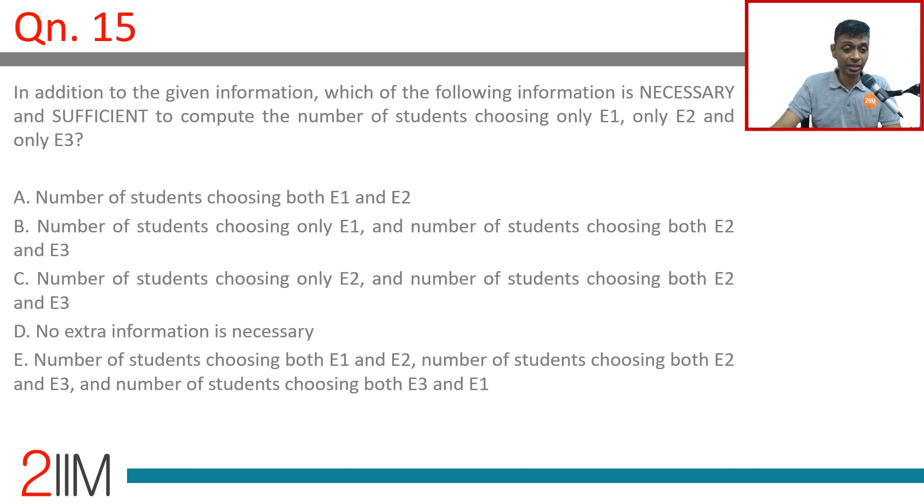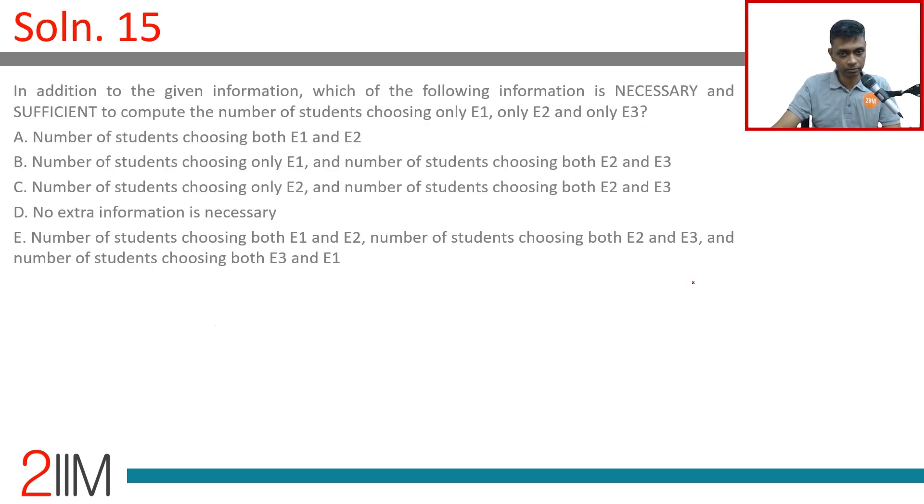In addition to the given information, which of the following information is necessary and sufficient to compute the number of students choosing only E1, only E2, and only E3? Let's recap: E1, E2, E3. We know E1 equals 40, E2 equals 80, E3 equals 120. P, q, r, outside is 0, total is 190. So which of the following is necessary and sufficient to find those who do only E1, only E2, and only E3?